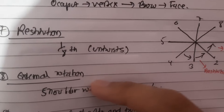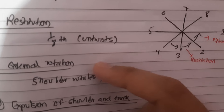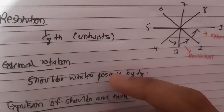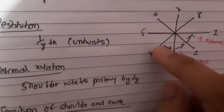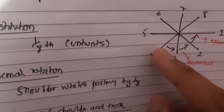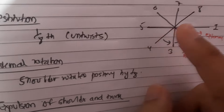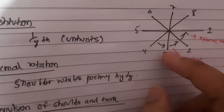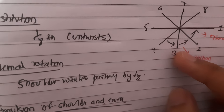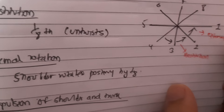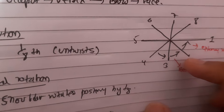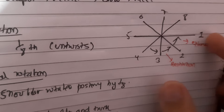External rotation is the movement of rotation of the head visible externally, due to the internal rotation of the shoulders. As the anterior shoulder rotates toward the pubic symphysis from the oblique diameter, it carries the head in external rotation through one-eighth of the circle in the same direction as restitution. The shoulders now lie in the anterior-posterior diameter, and the occiput points directly toward the maternal thigh.